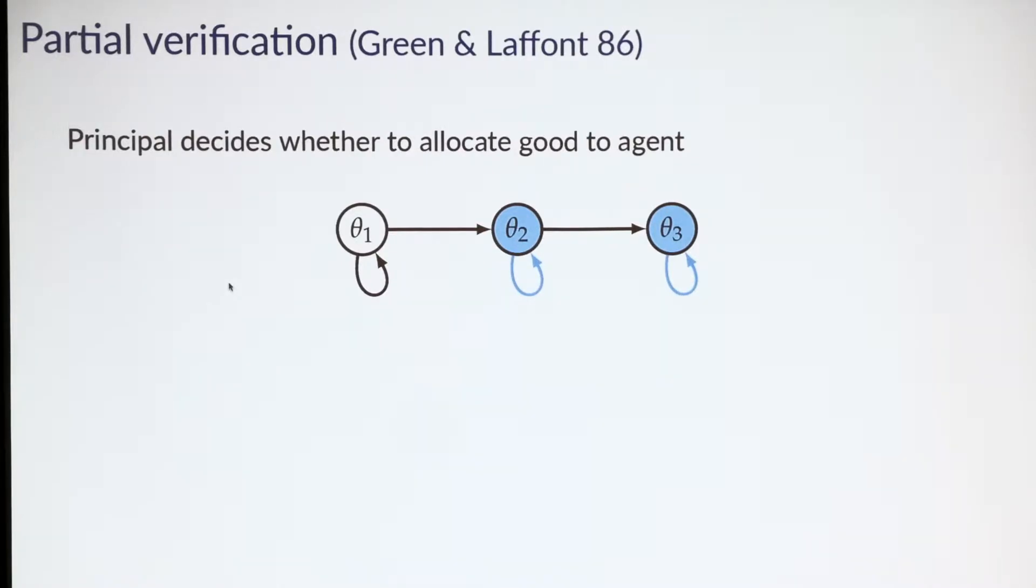There's a problem here, though, because agent 1, if the agent is type 1, still likes the good and can report type 2 and get the good. So this is not truthfully implementable. But it will be implementable if we say report your type, and if you report type 3, you'll receive the good. Otherwise you won't. Here both type 2 and type 3 can report type 3, but type 1 is not.